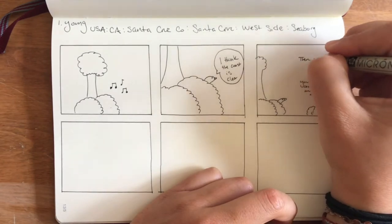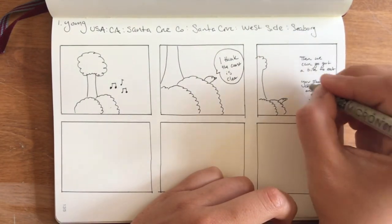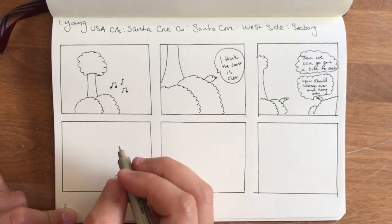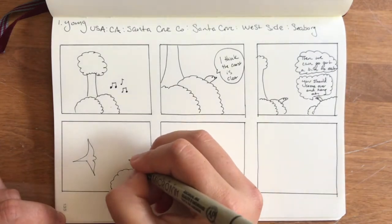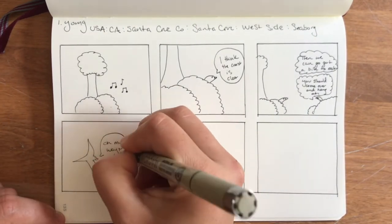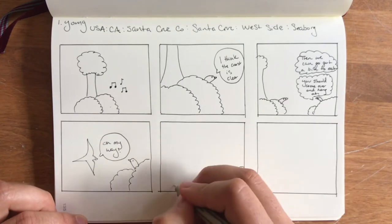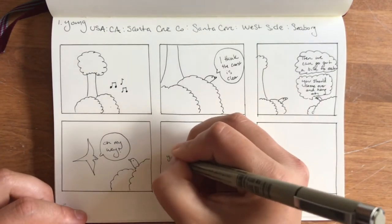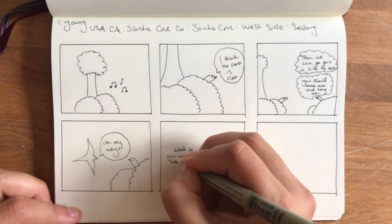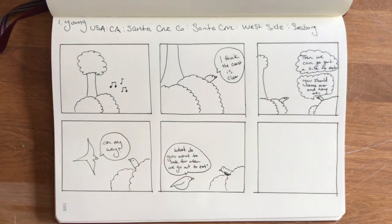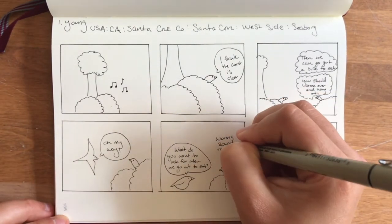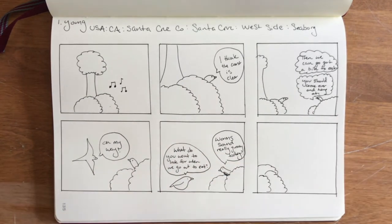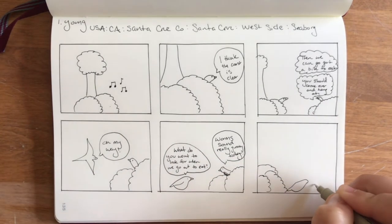The third and fourth panels show my observations of the bushes reminding me of houses or apartment complexes. One of the birds wants to go visit the other bird's home to eat lunch together. The last two panels show the observed behavior of the birds eating together along with some predictions of what the birds might be eating.